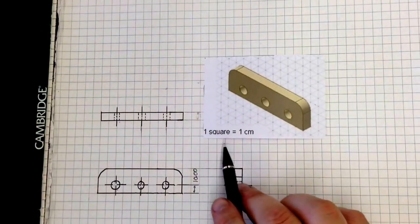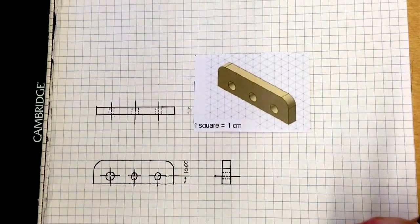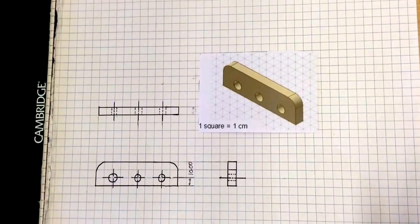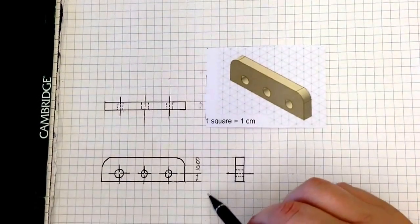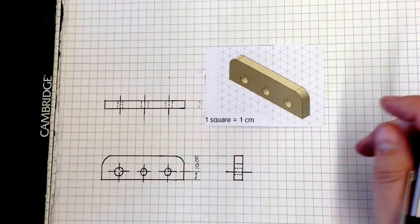Now you remember that this one square equals one centimeter. One centimeter is kind of a large measurement to actually dimension things, so we're just going to do millimeters. Because remember, 10 millimeters equals one centimeter.